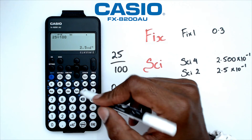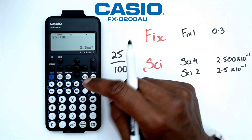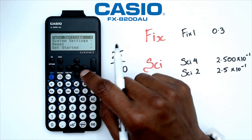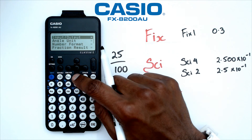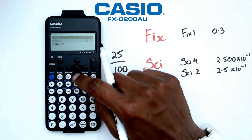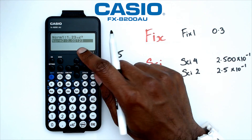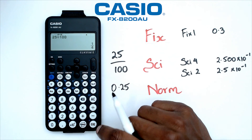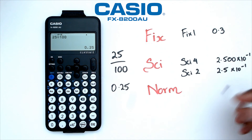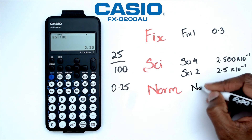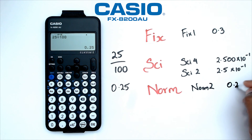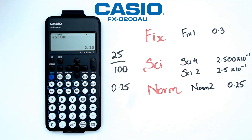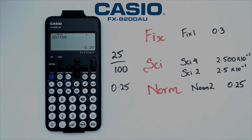So I want to go back to normal and have this display as 0.25. The way I do that is go back to settings, calc settings, go into number format, go back down to norm, and click on norm 2. Once we do that, our number returns to 0.25. So at norm 2, it is going to give us 0.25. That's basically it for this video — just a quick one to show you the three different number formats available in this calculator.